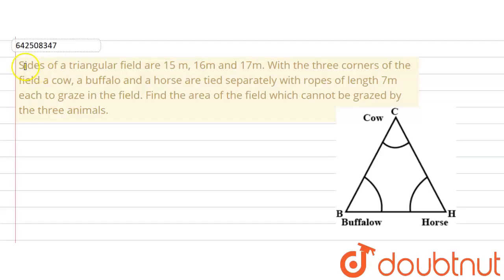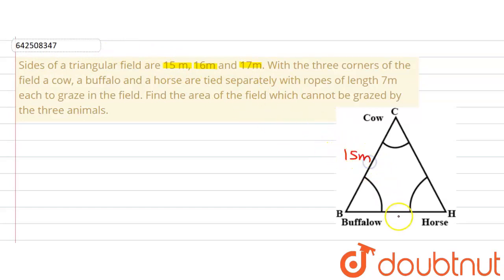The given question says that sides of a triangular field are 15 meter, 16 meter and 17 meter. So there is a triangle with all three sides as 15 meter, 16 meter and 17 meter.